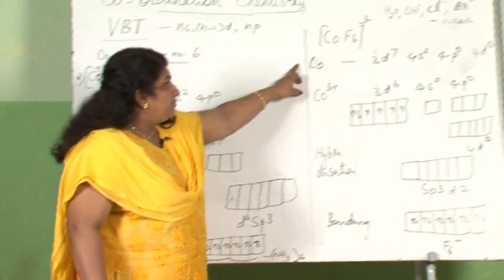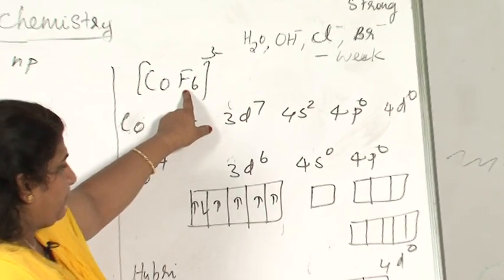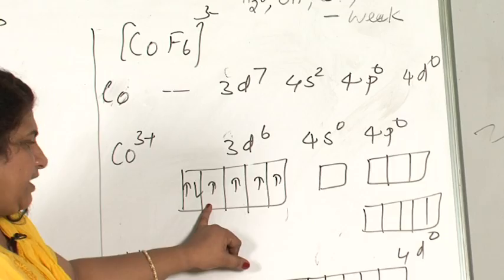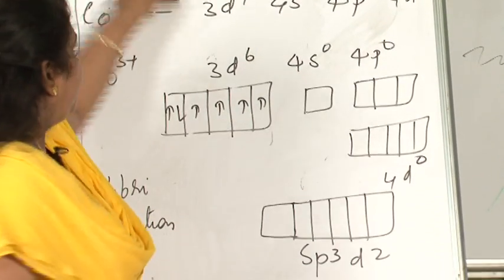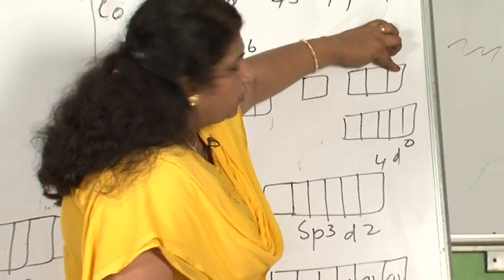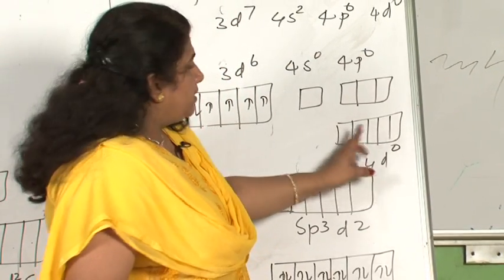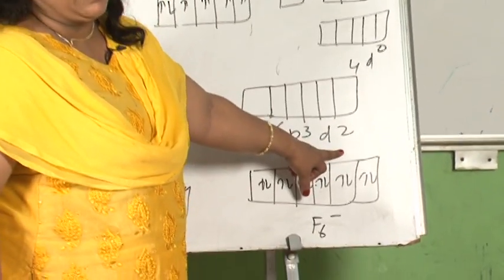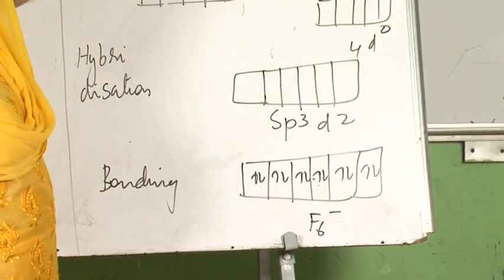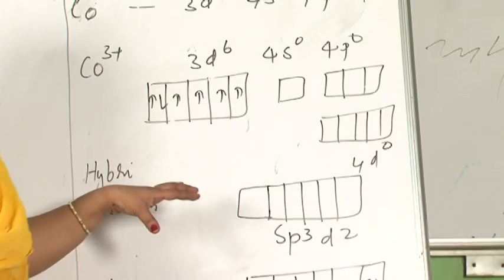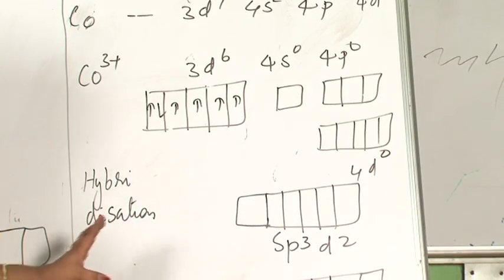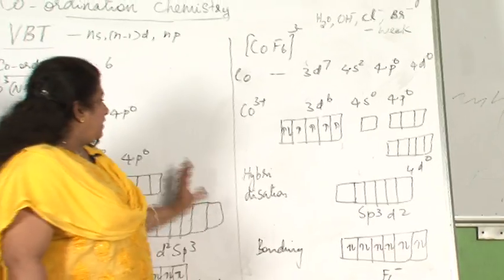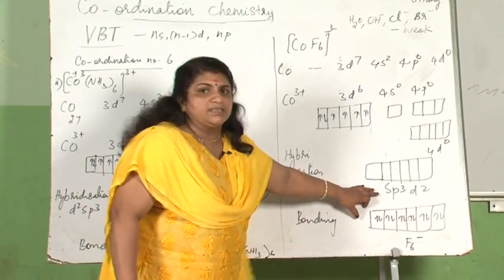Valence bond theory has many disadvantages, so scientists developed crystal field theory (CFT), which rectified the problems of VBT — though CFT also has drawbacks. CFT states: in the absence of a ligand, the metal is undisturbed and the d orbitals experience no repulsion. When a ligand approaches the central metal ion for coordination, there is repulsion between electrons of the central metal ion and the ligand. CFT is purely based on electrostatic interaction. Ligands are considered as point charges approaching from far away. The central metal ion was in a stable state; when ligands approach, electrons in the metal face repulsions and degeneracy is lost — the five d orbitals no longer have the same energy.